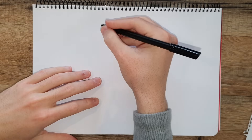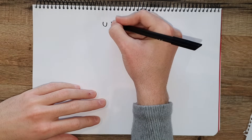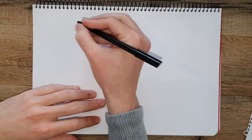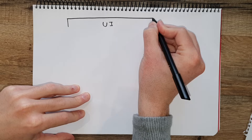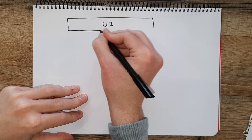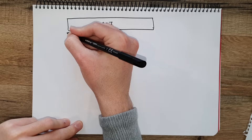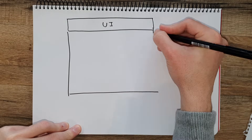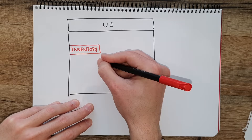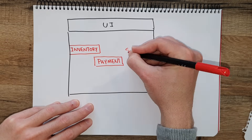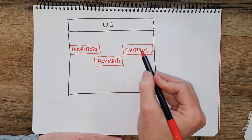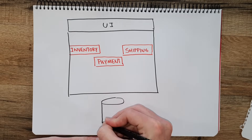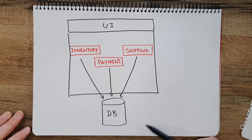Usually you will have a monolith or a single application where you could have different modules that do different things. For example, we can have our e-commerce site from previous videos where we could have everything inside a single system — an inventory, a payment, and a shipping module. All of them interact between themselves, or also store to a common database.